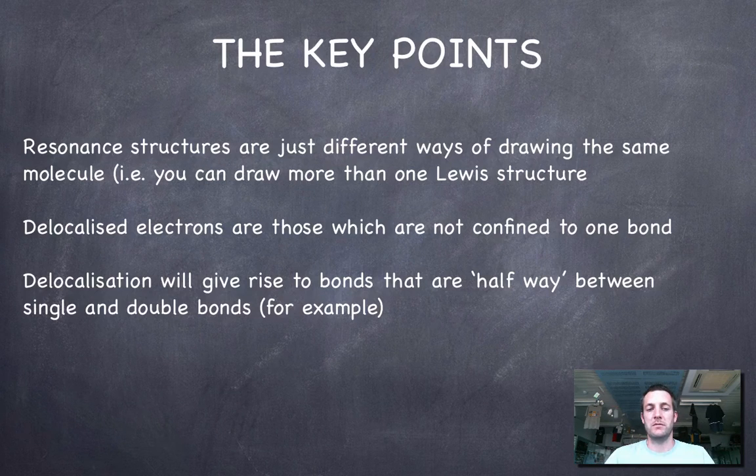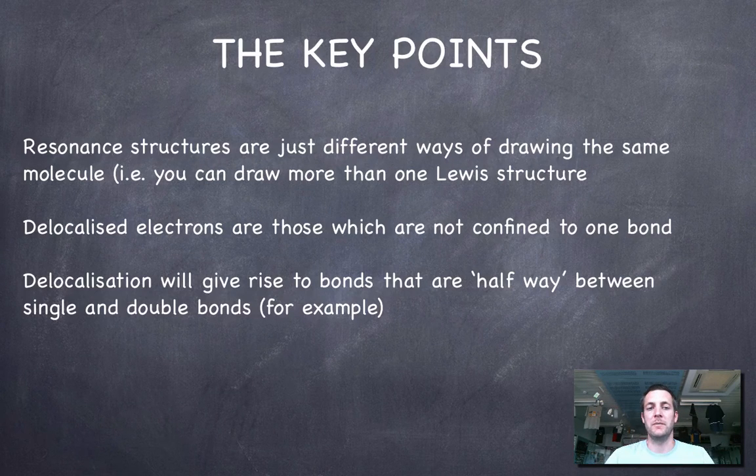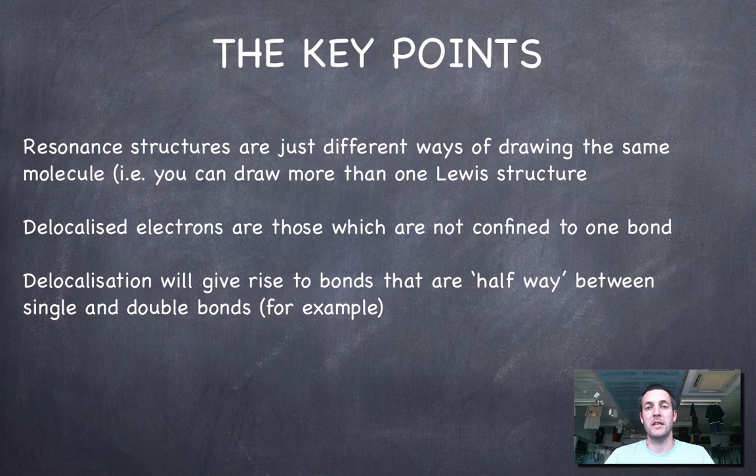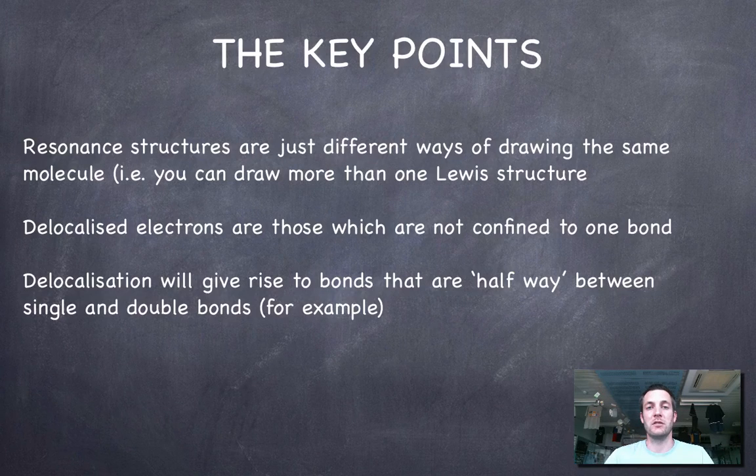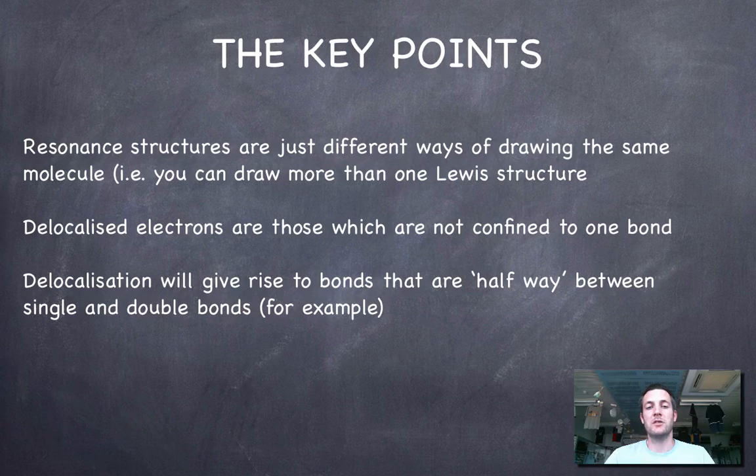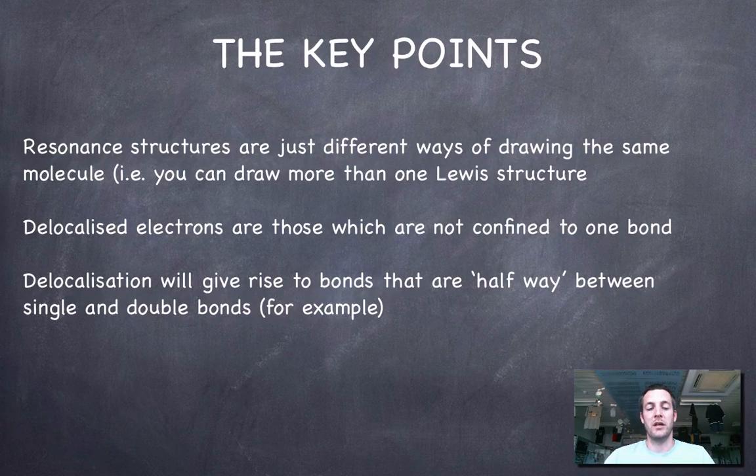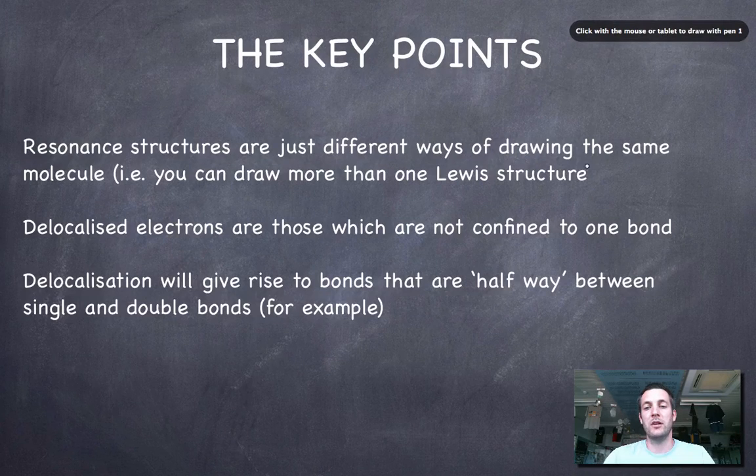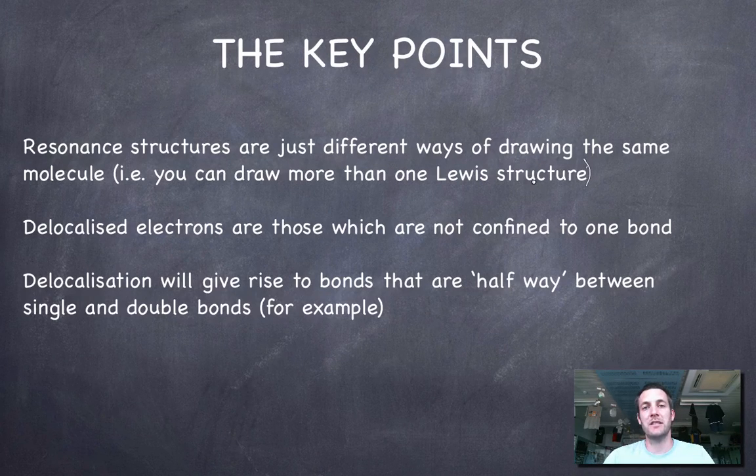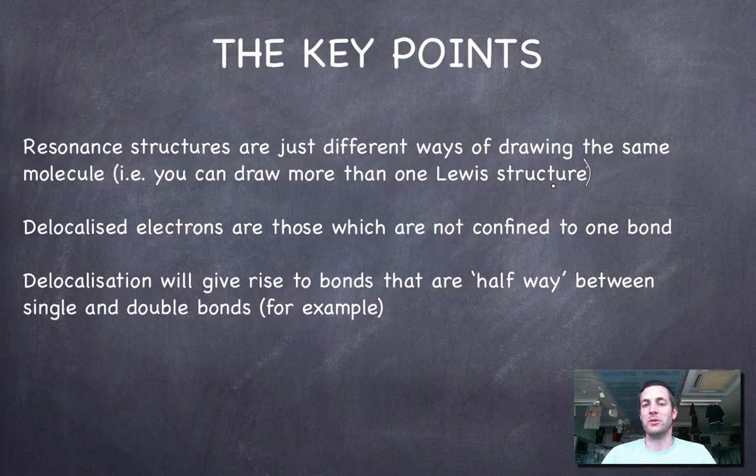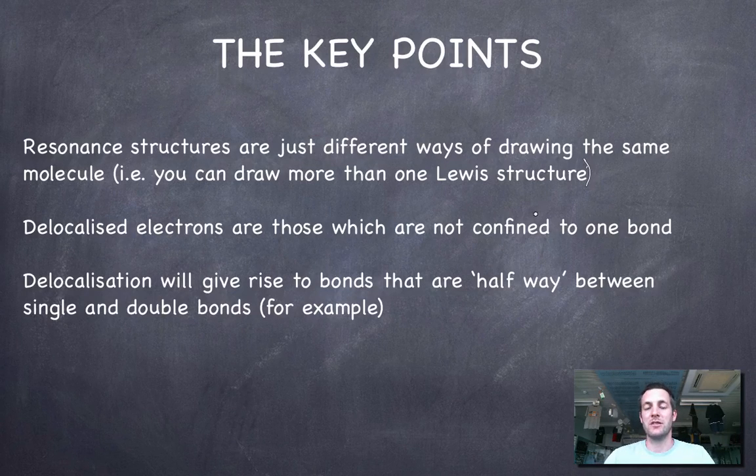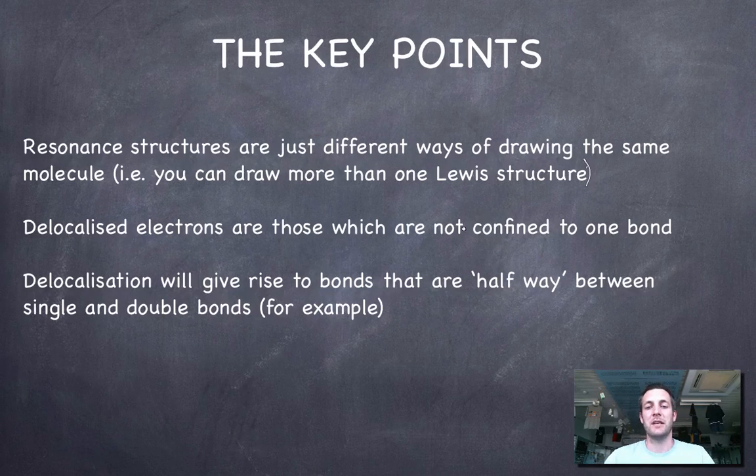The key points that we've looked at so far, we're going to go into examples of where we can see delocalization and how we can represent this using resonance forms in the next film. Key points from this film are that resonance structures are just different ways of drawing the same molecule. You can draw more than one Lewis structure, and these Lewis structures have to make sense. You can't just draw bonkers Lewis structures and say that there are resonance forms of a molecule. They have to make sense.